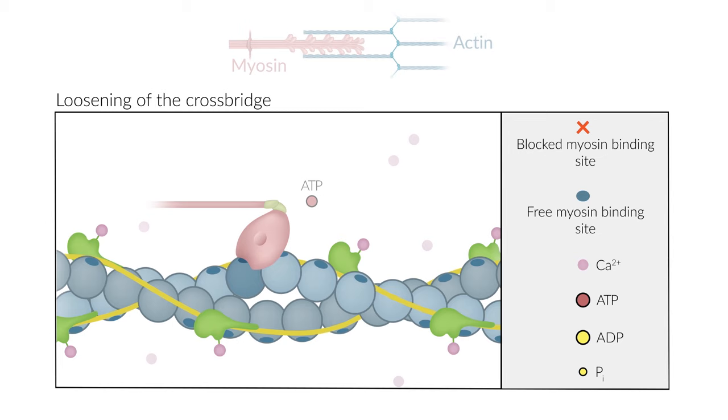A new ATP molecule can now bind to the empty ATP binding site of the myosin head. This leads to a conformational change of the myosin head and its detachment from actin. The myosin head returns to its starting position.